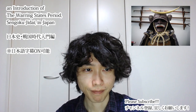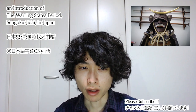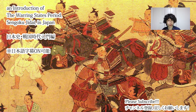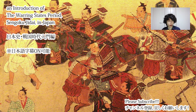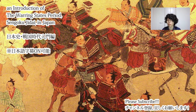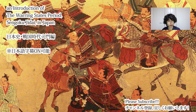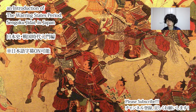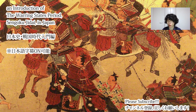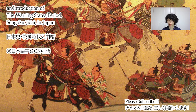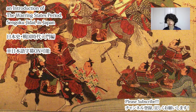Hi guys, welcome back to my channel. The topic at this time is the Sengoku Jidai, which means the Warring States period of Japan, from the late 15th century to the early 17th century. The Sengoku Jidai is the period when Samurai and Ninja were most active and there were many battles in Japanese history, making it perhaps the most interesting period for people who enjoy Samurai and Ninja content.